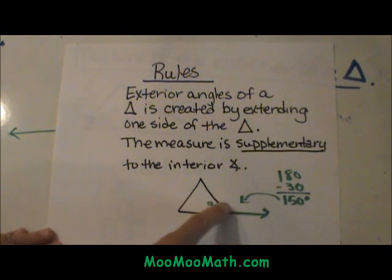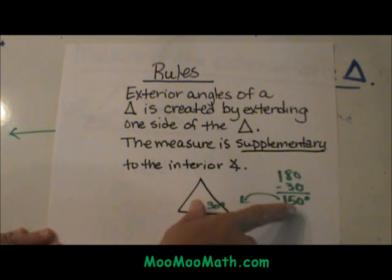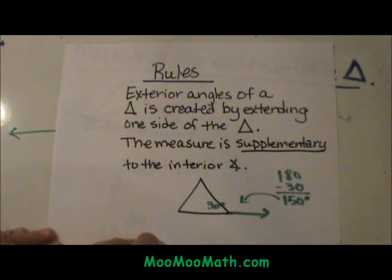Here is one more example. We have a triangle. The interior angle is 30. We extend that side out creating an exterior angle and we find the measure of that by subtracting it from 180. So we have a 150 degree angle.